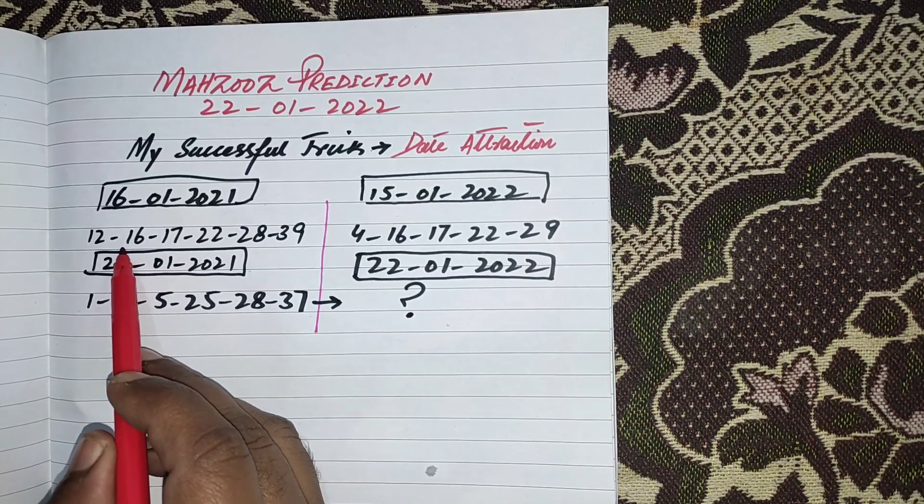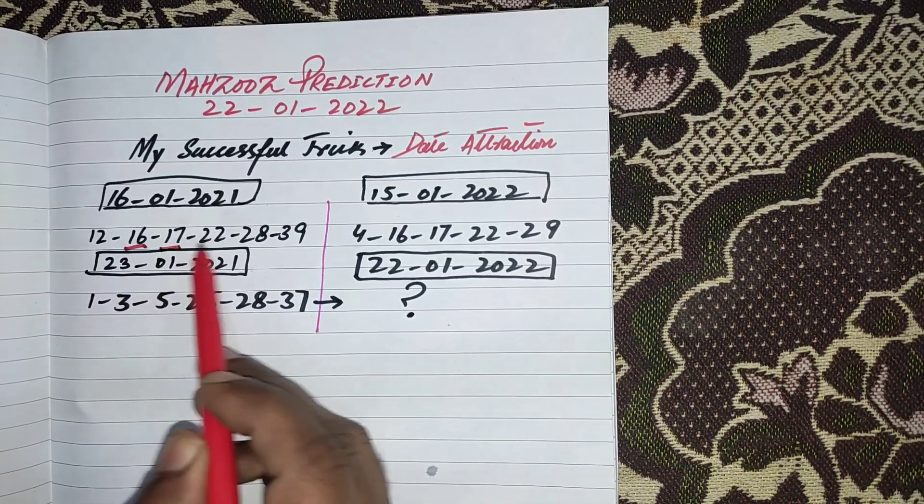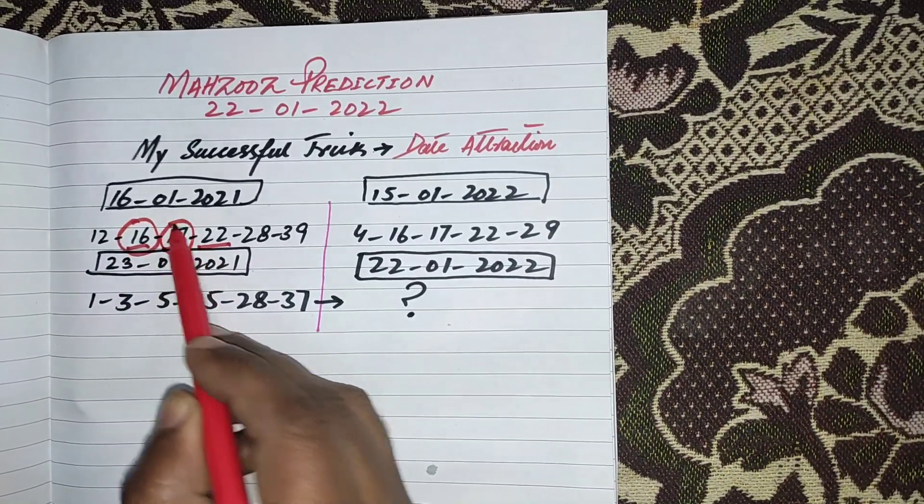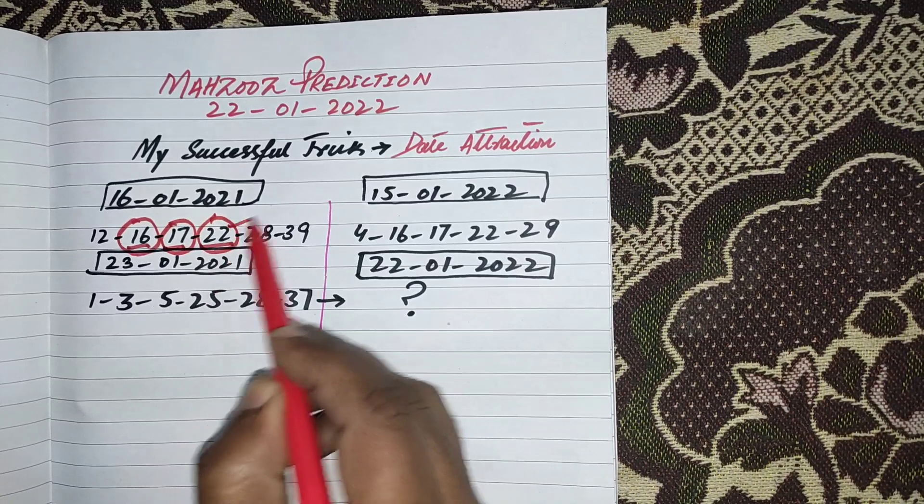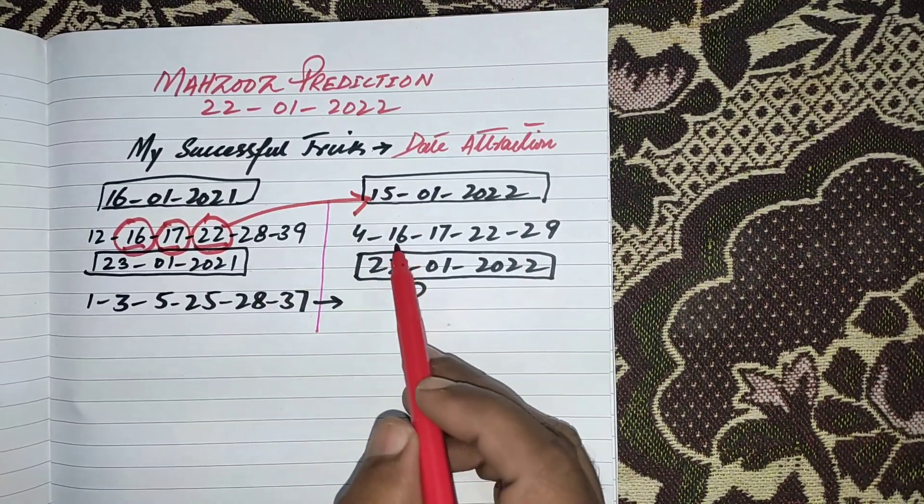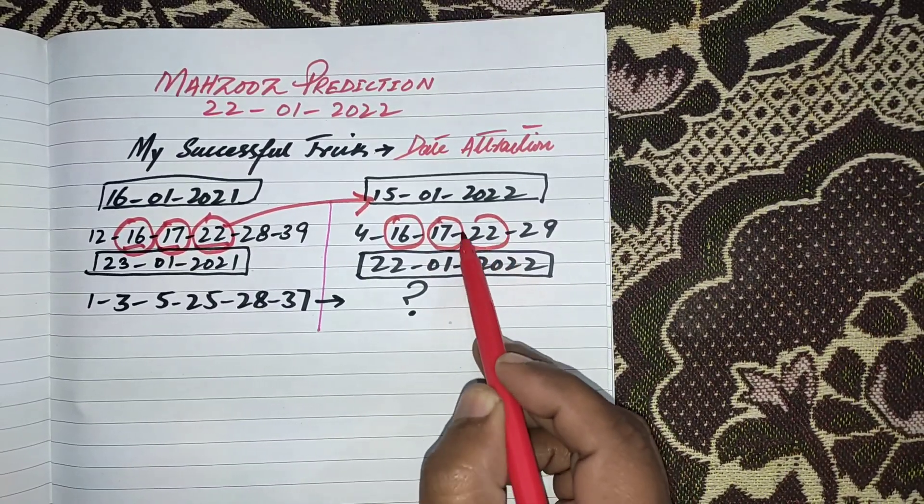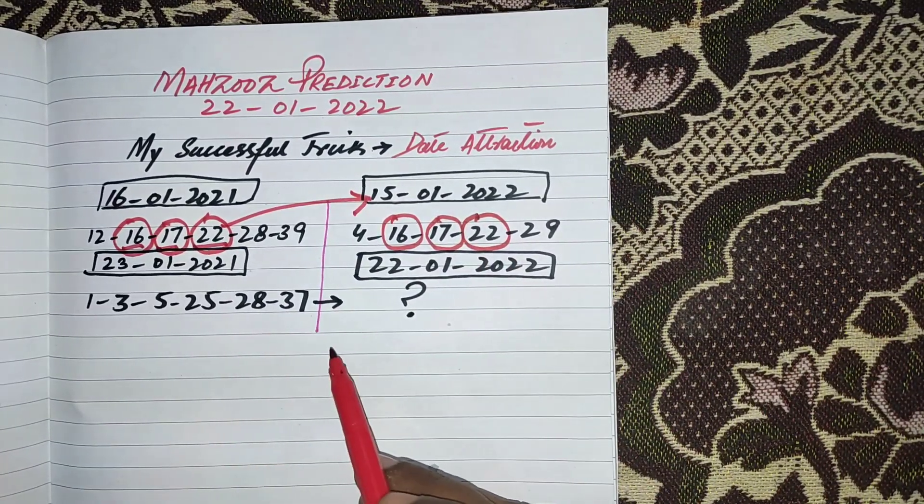The pair was 16, 17 and 22. These 3 numbers attract to the date and came in your previous result: 16, 17, 22. Three numbers came according to this trick.